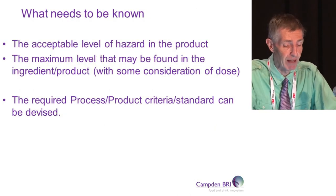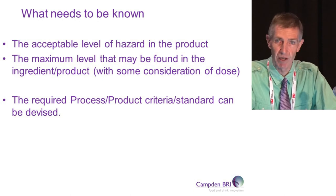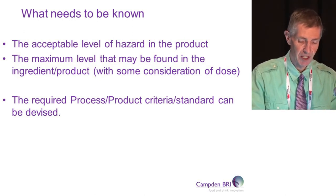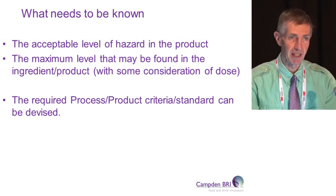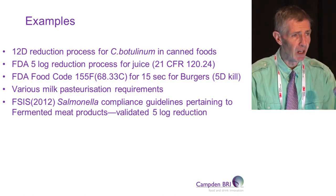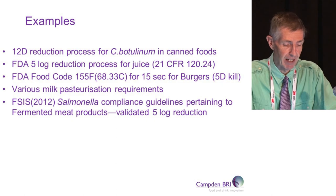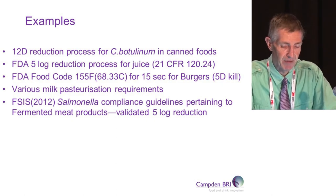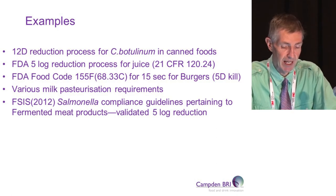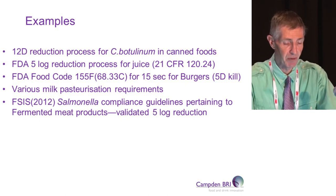You need to know the acceptable level of a hazard in the product, the maximum level that might be found in the ingredients, and then devise the appropriate process or product criteria to reduce the hazard to the acceptable level. There are numerous examples: the 12D log reduction process for Clostridium botulinum in canned foods, the five log reduction process for juice from FDA and USDA, 68 degrees for 15 seconds for burgers for a five log kill, various milk pasteurisation treatments, and the Salmonella compliance from FSIS pertaining to fermented meats - a validated five log reduction process.